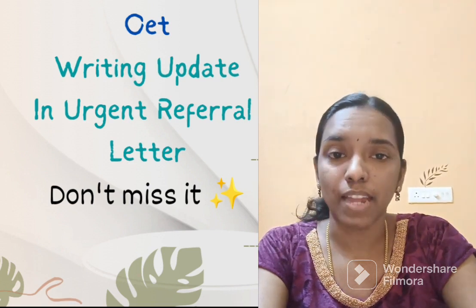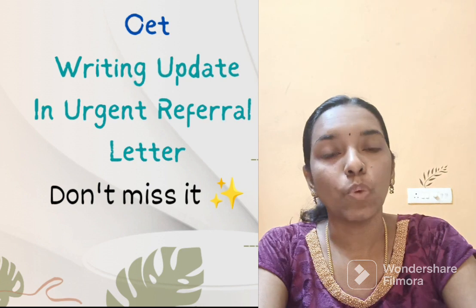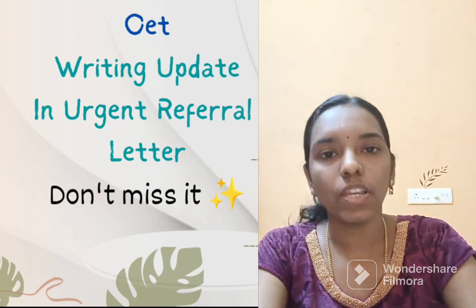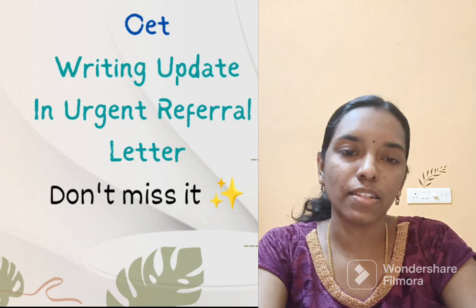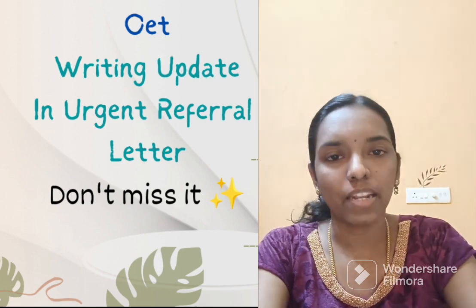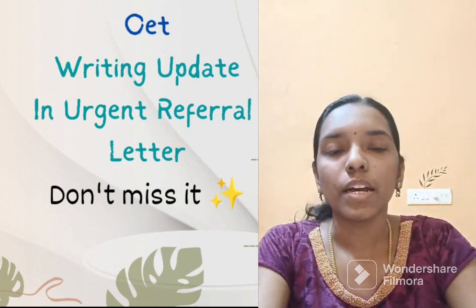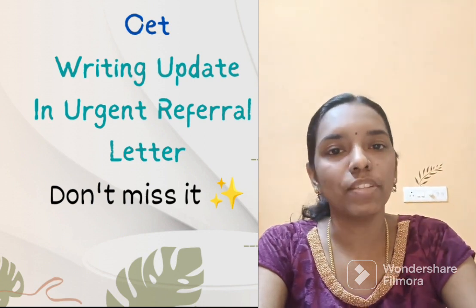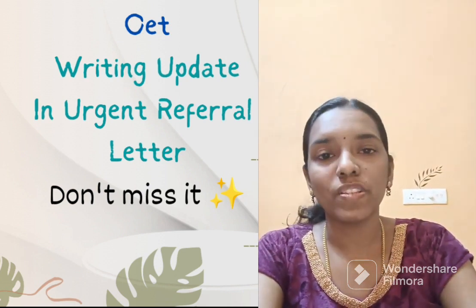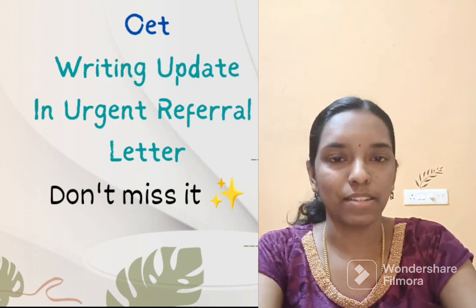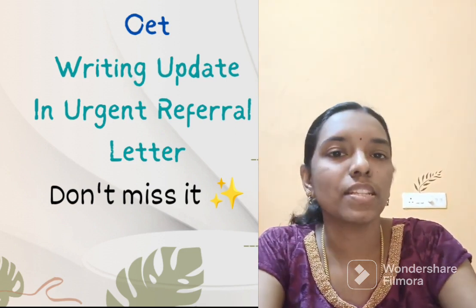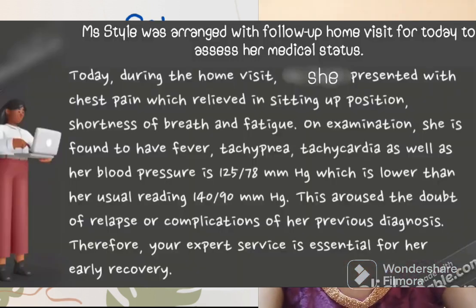For this scenario, start with today's home visit. You can write: 'Miss Style was arranged with a home visit today under our nursing service for the follow-up of her medical condition.' Then describe what happened on today's visit and end with the reason for referral. In the next paragraph, write: 'Initially, on this date, Miss Style was admitted to Green Valley Hospital with complaints of these symptoms.' Continue the old history and conclude with: 'Therefore, a home visit was arranged under my service.' This creates a circular connection between the two paragraphs, making it easier for the reader to understand.